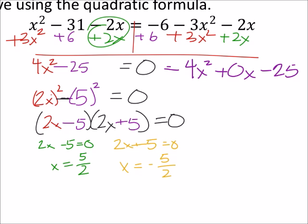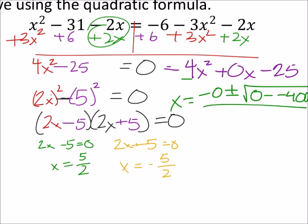So, in the quadratic formula, we got x equals negative b, so negative 0, which of course isn't going to affect anything, and then we got the square root of 0 squared, which is 0, minus 4 times 4 is 16, times 25, a negative 25 would be a negative 400, all over 2 times a, which would be 8.